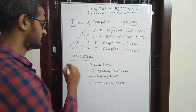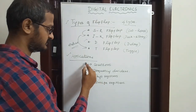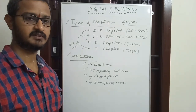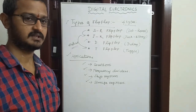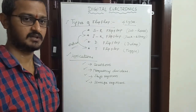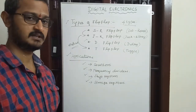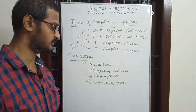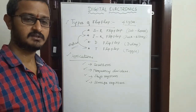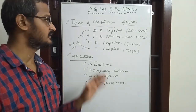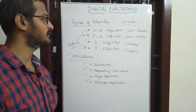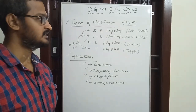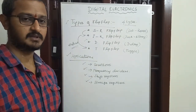The applications of flip-flops include counters, frequency dividers, shift registers, and storage registers. For example, counters are used in industries like counting products on a conveyor. Frequency dividers are used in communication. Shift registers and storage registers are also key applications. A flip-flop is fundamentally a one-bit storage device. In the next video, we will cover the types of flip-flops in detail.